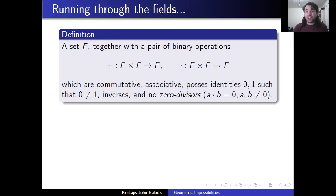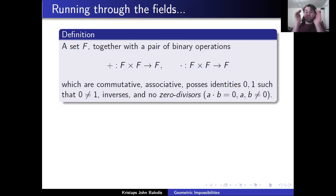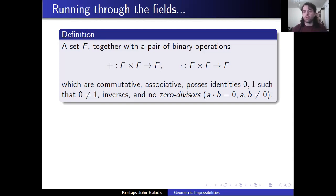There's actually one thing I forgot to write down here, and that is distributivity. So that says a times (b plus c) is equal to a times b plus a times c — the normal distributive relationship of addition and multiplication.